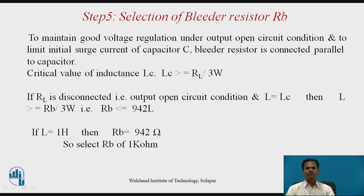Step 5 is the selection of bleeder resistor. To maintain good voltage regulation under output open-circuit condition and to limit the initial surge current of the capacitor, the bleeder resistor RB is connected in parallel to the capacitor. The critical value of inductance LC must be greater than RL / (3ω). If RL is disconnected, then L must be ≥ RB / (3ω), so RB ≤ 942 × L. With L = 1 henry, RB = 942 ohm. Select bleeder resistor RB of 1 kilo ohm.